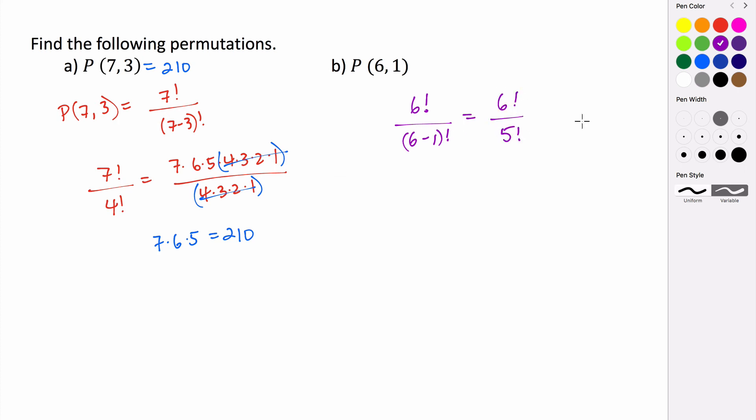Write out your product. So it's 6 times 5 times 4 times 3 times 2 times 1, all of this divided by 5 times 4 times 3 times 2 times 1.